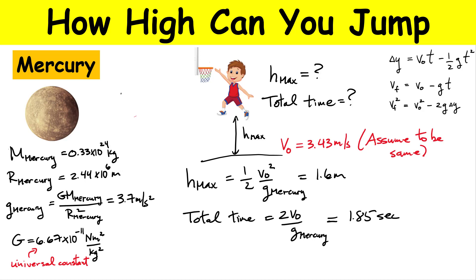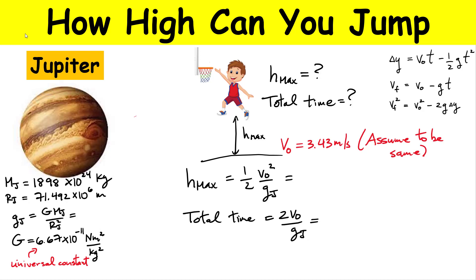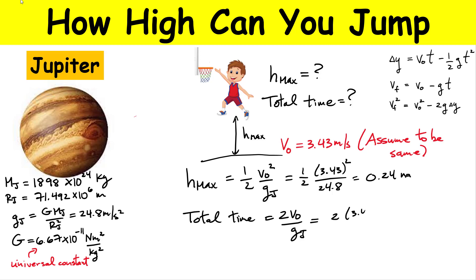Our last case is Jupiter — the biggest planet in our solar system. Here's the astronomical data: a much larger mass and a much bigger radius. Substituting those values to find little g on Jupiter, I get 24.8 meters per second squared. Our maximum height — one-half times V-naught squared divided by 24.8 — gives a maximum height of only 0.24 meters, less than a foot. I better lower the basketball hoops! The total time in the air — 2 times V-naught divided by 24.8 — gives a flight time of just 0.28 seconds.